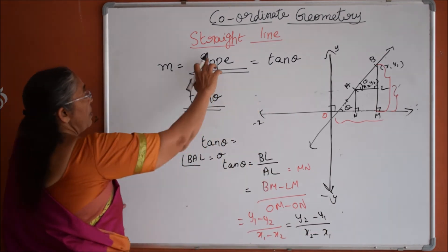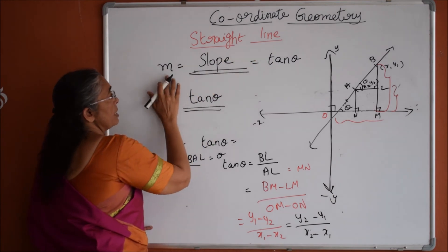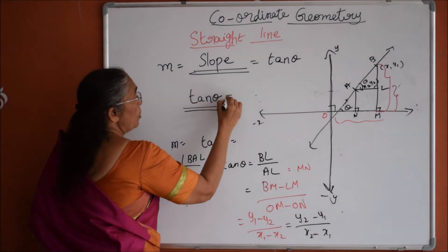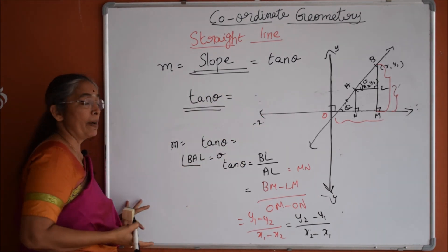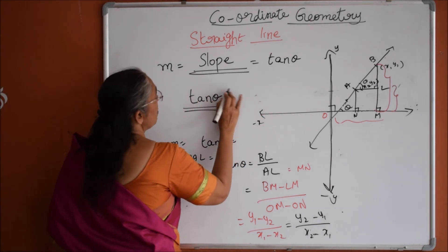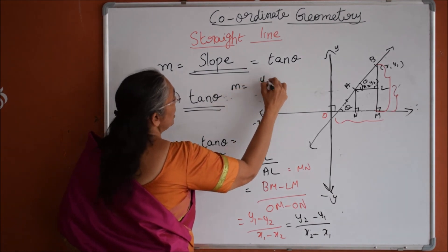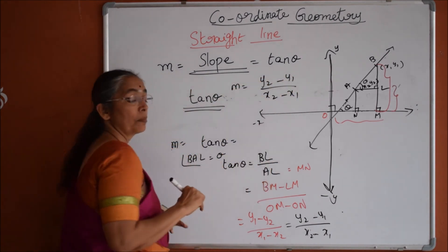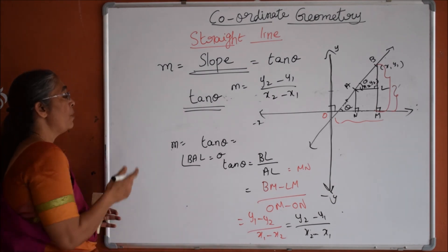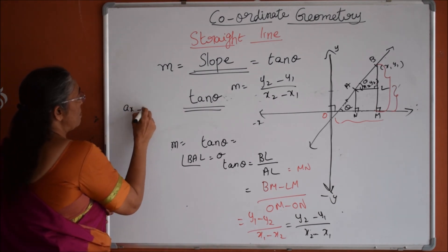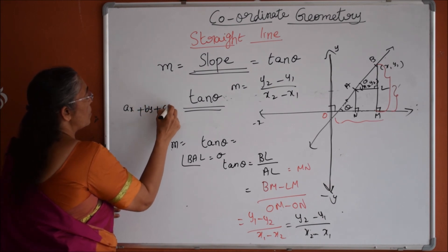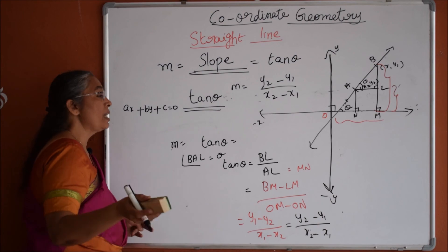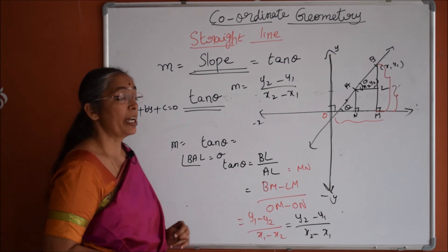So to summarize: when only the angle is given, M equals tan theta. When two points are given on a line, the slope M equals Y2 minus Y1 divided by X2 minus X1. And similarly, if you have the straight line AX plus BY plus C equals 0, then the slope will be minus A by B — we will discuss later how that is derived.